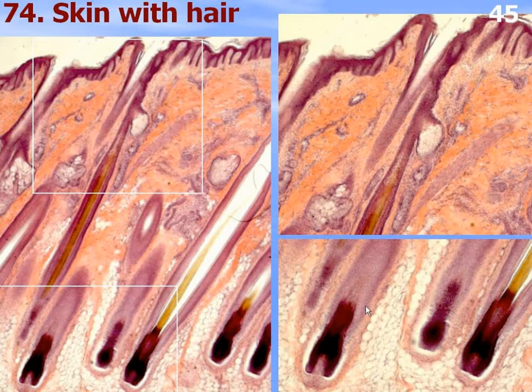The sweat gland wall consists of inner and outer epithelial layers surrounded by connective tissue.